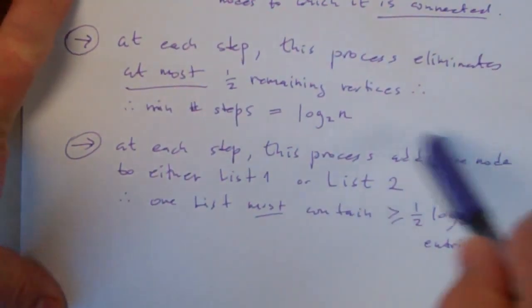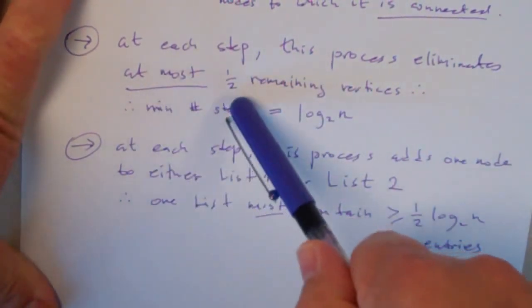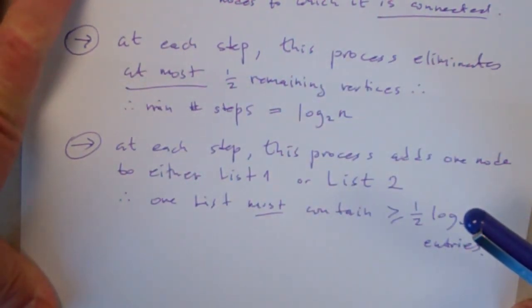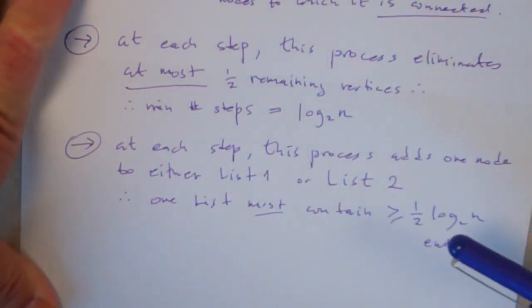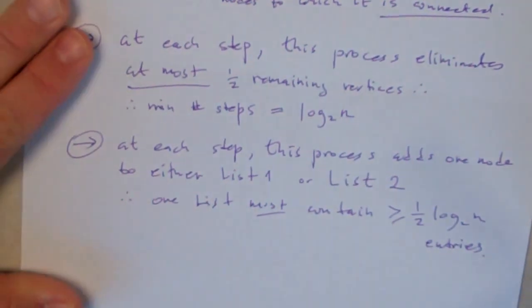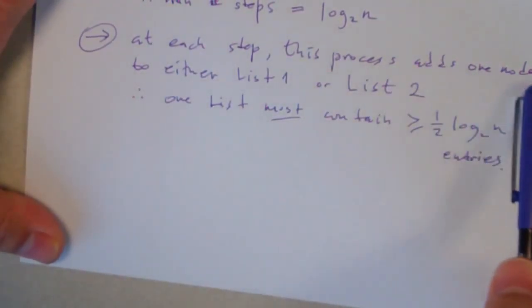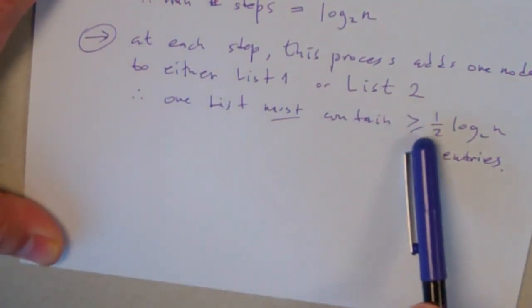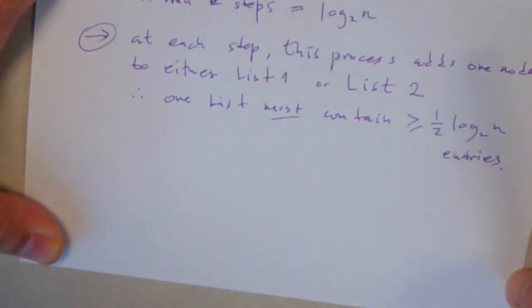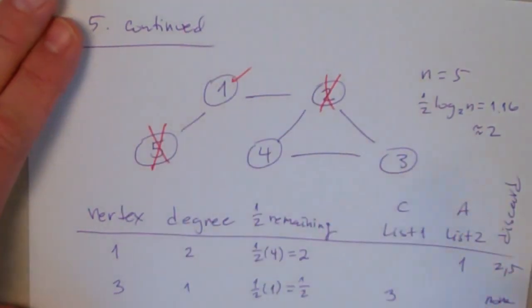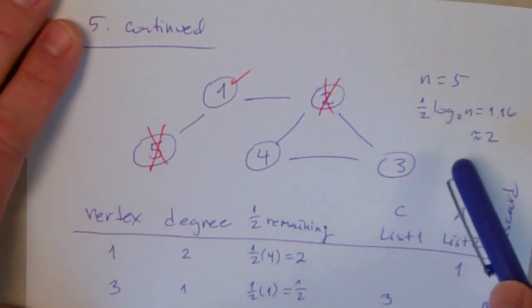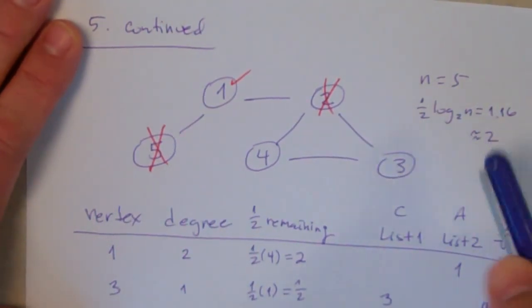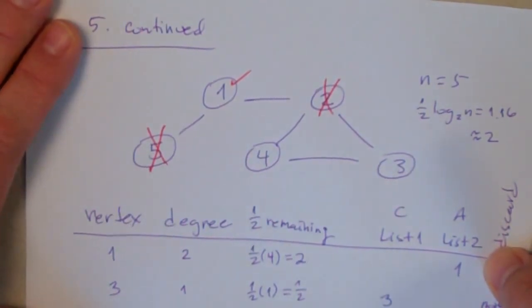So the important point goes back to the first thing we said. At each step, this process eliminates at most 1/2 of the remaining vertices. So the minimum number of steps possible is log_2 n. Now, of course, at each step, the process is adding one node to either list 1 or list 2. So one of the lists has to contain at least 1/2 log_2 n entries. Let's take a look at an example. Here I've got one where we have a 5-node graph, 5 vertices. 1/2 log_2 5 is 1.16, but you have to round up to the nearest integer, so that's going to be 2.